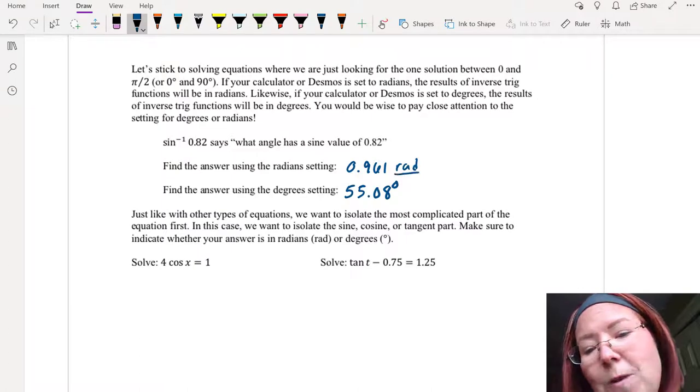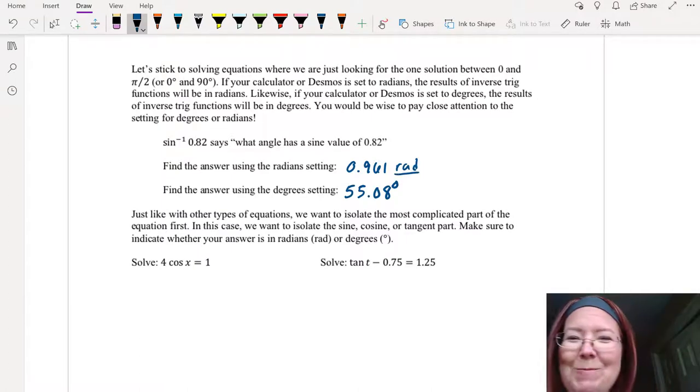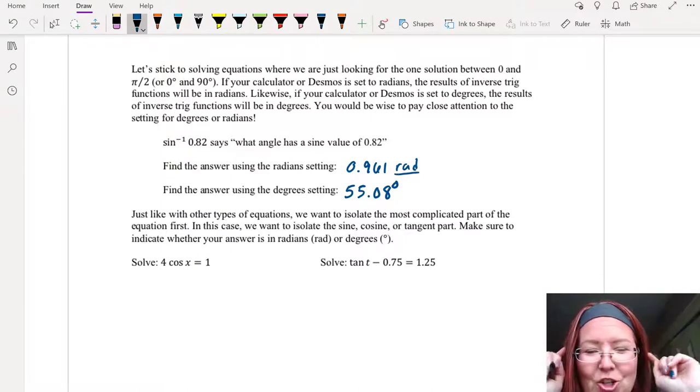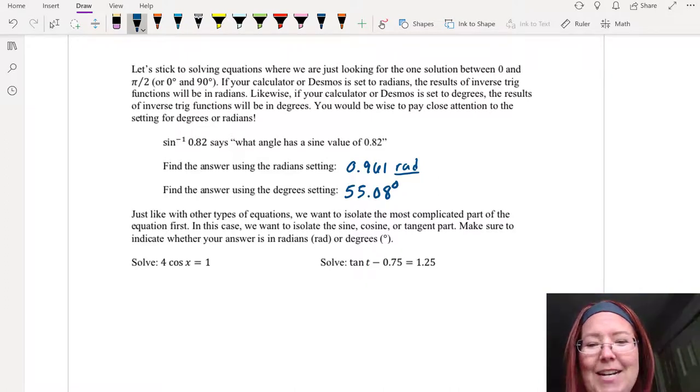And we'll make sure to put a degrees symbol on that so we can tell the difference. For this reason I do also write radians when my answer is in radians. A number without radians or degrees is assumed to be radians. So be careful that you actually know what you're doing.